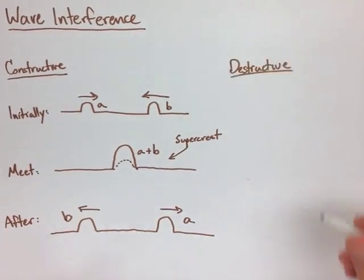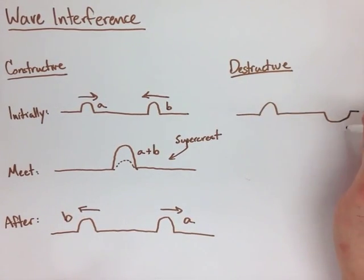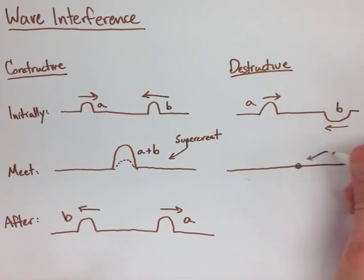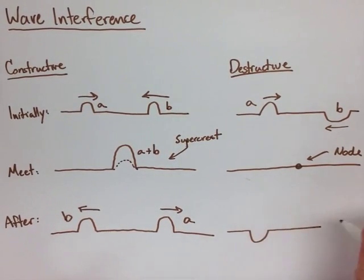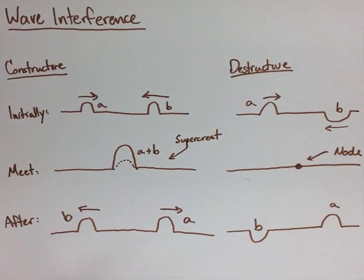Now destructive interference is kind of the opposite. We have one wave on the top and one wave on the bottom. So we still have A and B. Now when they meet here, it's called a node, because they cancel each other out if they're the same size. And then after, they continue on their way the same way they did in constructive interference.